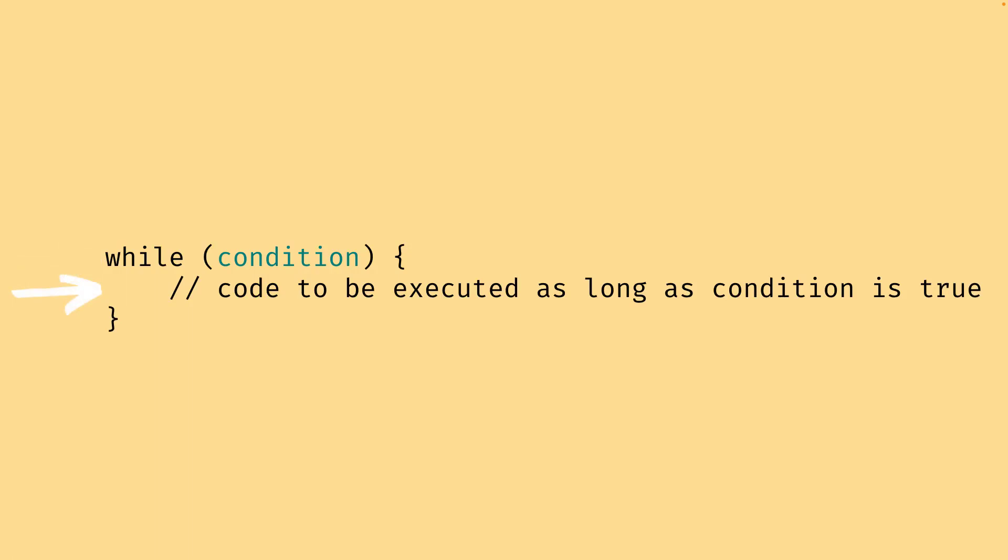The code will be executed and the condition will be evaluated again until the condition becomes false. At that point, the loop will terminate and the program will continue executing the code that follows the while loop.